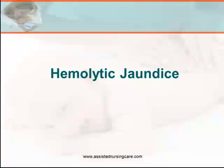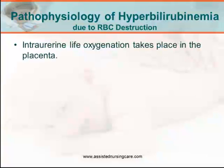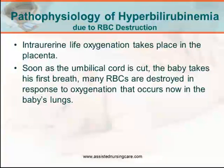Now let us talk more about hemolytic jaundice. Here is a brief pathophysiology of hyperbilirubinemia due to red blood cell destruction. In intrauterine life, oxygenation takes place in the placenta. As soon as the umbilical cord is cut, the baby takes his first breath. Many red blood cells are destroyed in response to the oxygenation that now occurs in the baby's lungs.